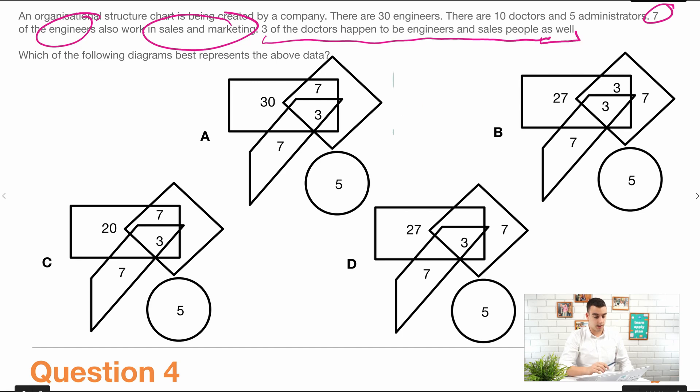So we know that we have to have the engineer box adding up to 30. So let's just see if any of these boxes add up to 30. We can assume that these five administrators are here because it's in every single one. So they're all the same. So we shouldn't even look at this because they're in every single option.